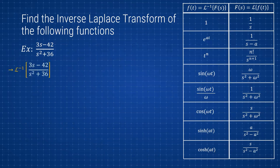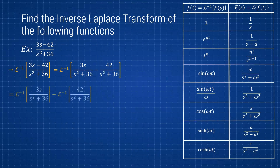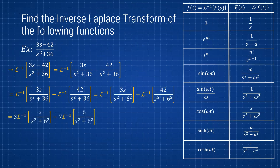We want to take the inverse Laplace of this, but there isn't really a table entry that matches this form directly. What we can do, since the numerator terms share the same denominator, is split the fraction: 3s/(s²+36) minus 42/(s²+36). We can then take the inverse Laplace of each one. We rewrite 36 as 6² to make the forms easier to identify.